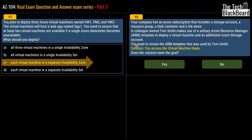Question 12: Your company has an Azure subscription including a storage account, resource group, blob container, and file share. A colleague named Tom Smith uses a single ARM template to deploy a virtual machine and an additional Azure storage account. You want to review that ARM template. The proposed solution is to access the virtual machine blade. The correct answer is no — you cannot access the ARM template from the virtual machine blade to see deployments of both the VM and storage account.